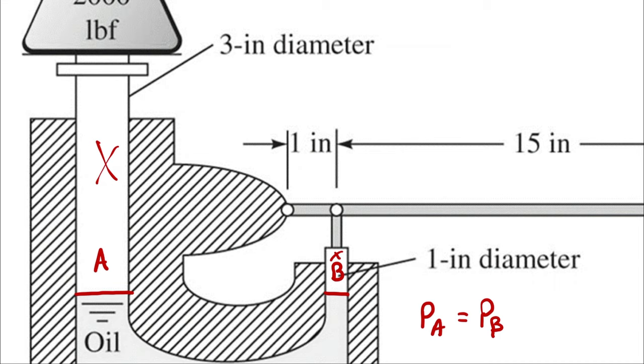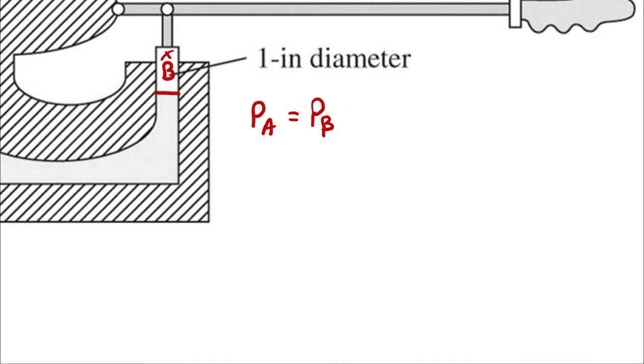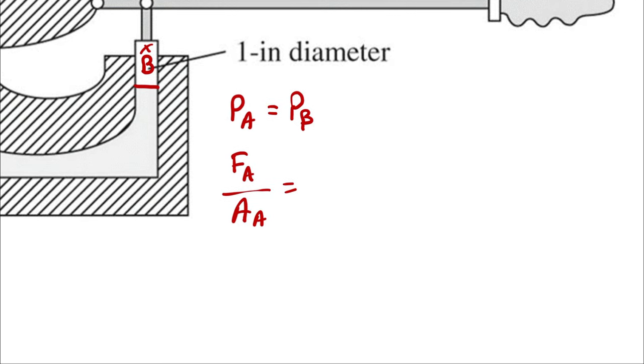We're going to use Pascal's law to relate the force applied at A to the force applied at B by recognizing that the pressure at A can be written as the force at A divided by the area at A, and the pressure at point B can be described as the force at B divided by the area at B.